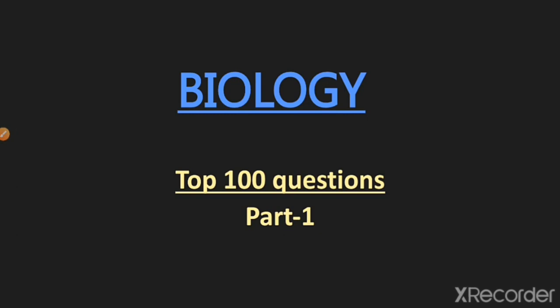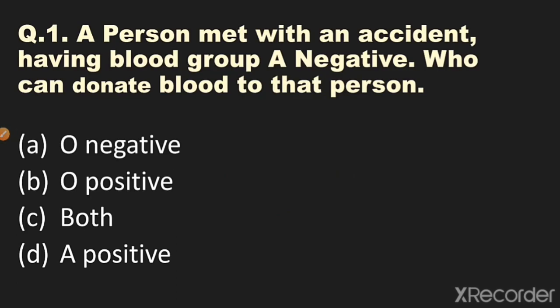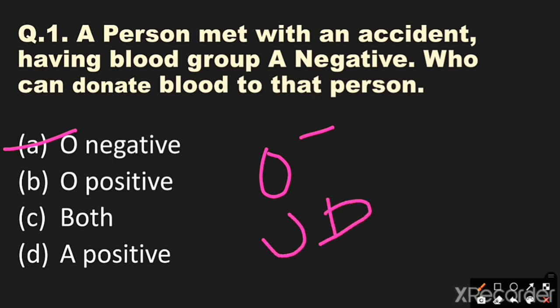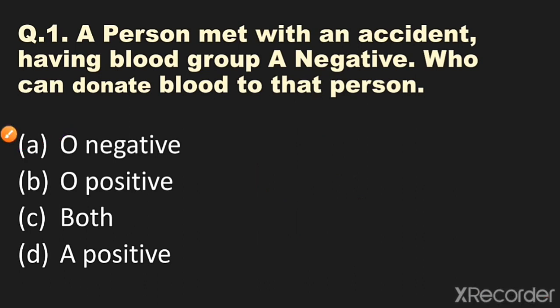Question number one: A person met with an accident having blood group A negative — who can donate blood to that person? Options: A) O negative, B) O positive, C) both, D) A positive. The answer is O negative, as O negative is a universal donor. It can donate blood to any other blood group, whether A negative, A positive, B negative, B positive, AB negative, AB positive, O negative, or O positive.